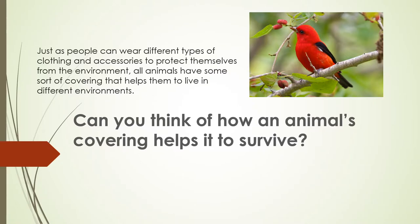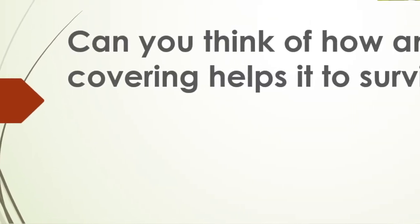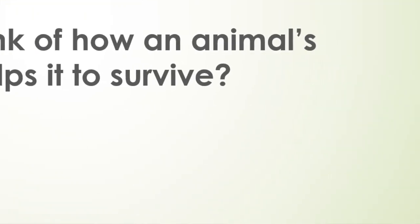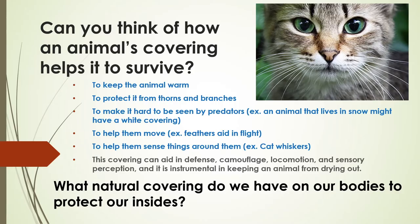Just as people can wear different types of clothing and accessories to protect themselves from the environment, all animals have some sort of covering that helps them live in different environments. An animal's covering helps it survive — it keeps them warm, protects them from thorns and branches, and makes it hard to be seen by predators. For example, an animal that lives in snow might have a white covering.